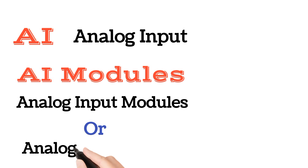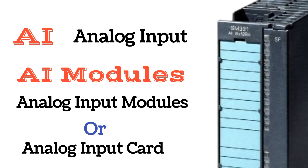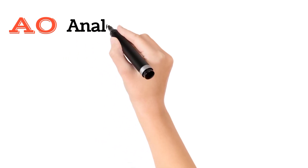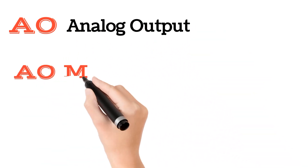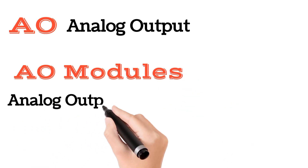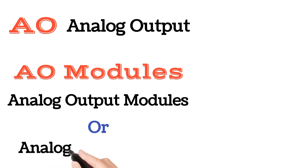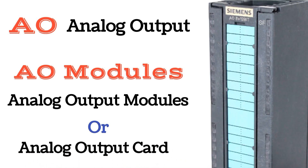AI means analog input. AI modules means analog input modules, also known as analog input cards. On analog input modules, AI is written as shown by the circle. AO means analog output. AO modules means analog output modules, also known as analog output cards.